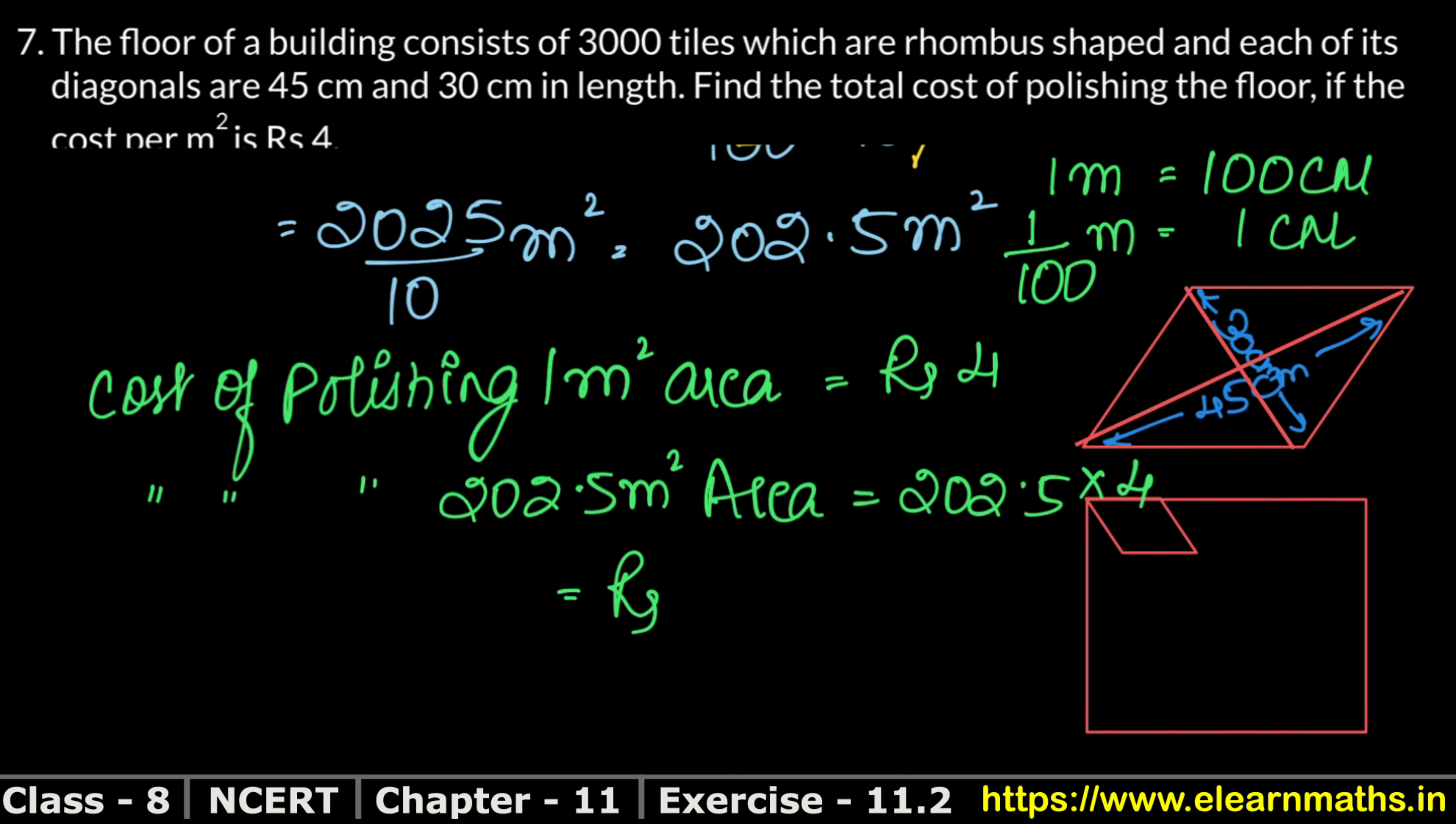How much is the answer? 4 times 5 is 20, 0 carry 2. 4 times 2 is 8 plus 2 is 10, carry 1. 4 times 0 is 0 plus 1 is 1. 4 times 2 is 8. And since it was 1 digit before the point, it will be 1 digit before the point. So how much is it? Rs. 810.